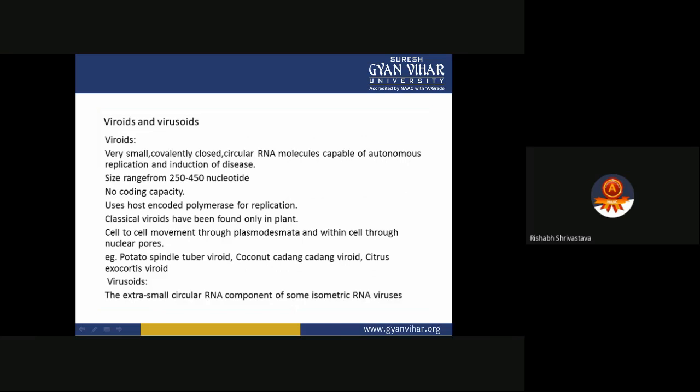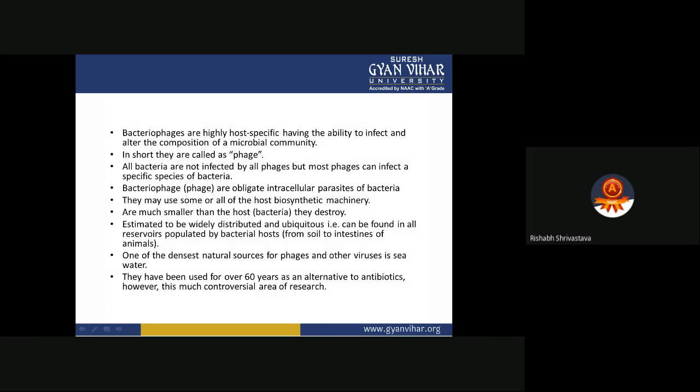Virusoids are extra-small circular RNA components of some isometric RNA viruses. We will talk about bacteriophages, viroids, and prions — discussing their structure and properties, the lytic and lysogenic cycles, and the differences between viroids and prions.